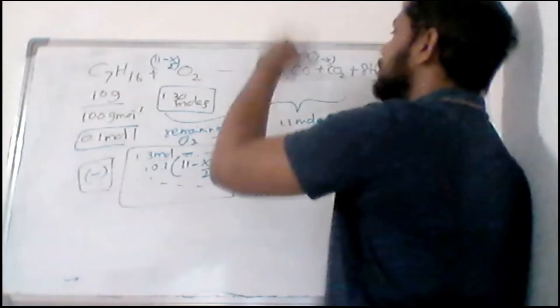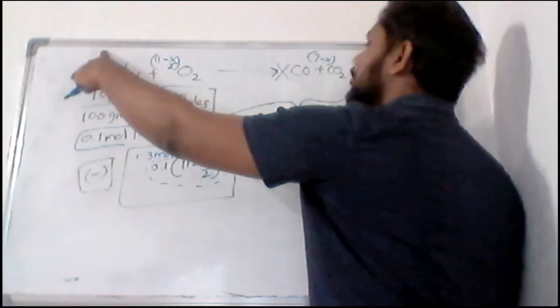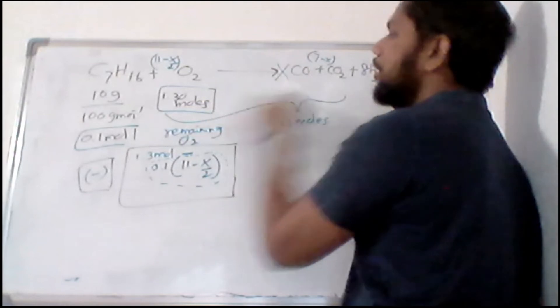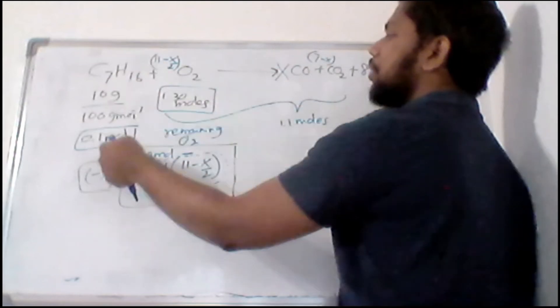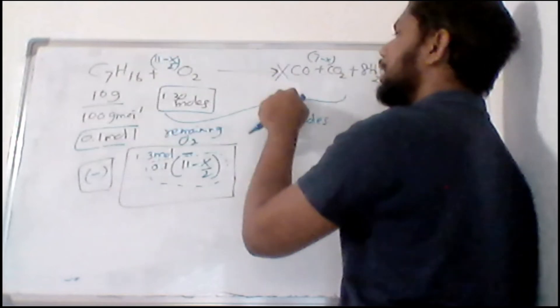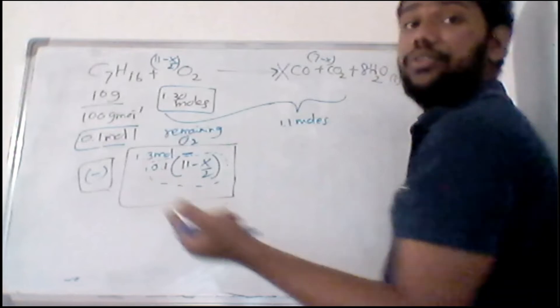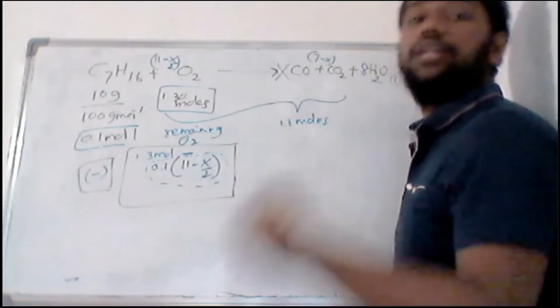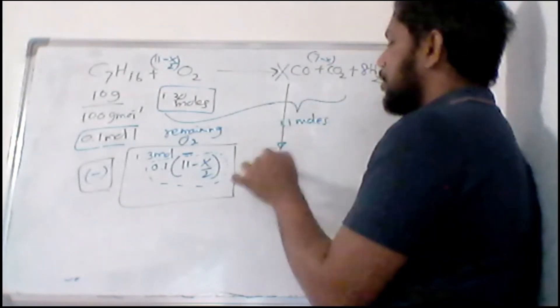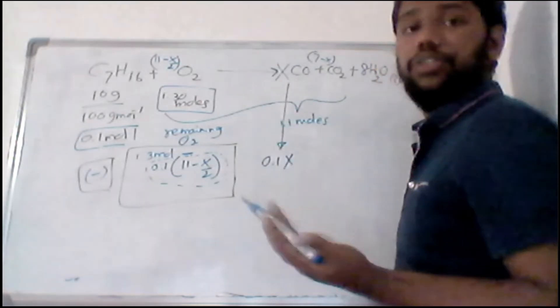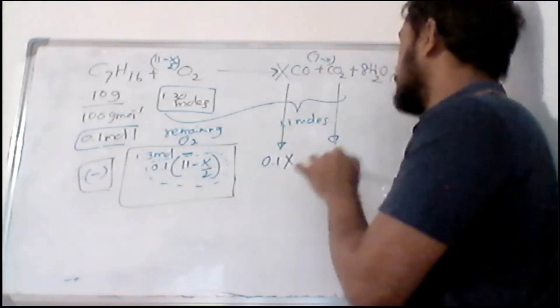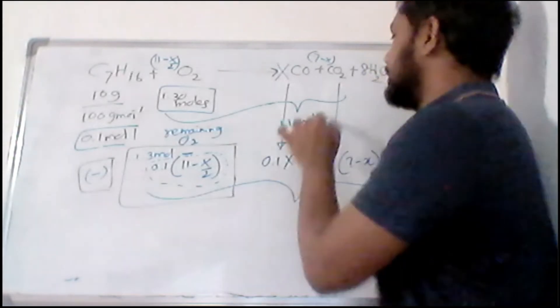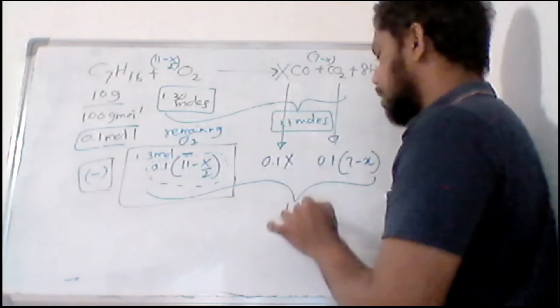Then how much CO is formed? So here the reacted amount of heptane is 0.1. So CO should be formed according to the stoichiometry. Like if you have 2 here, 0.1, if 1, 0.1 moles of heptane is reacted. If this is 2 here, 2 CO, it should be 0.2 moles of CO that should be formed. So how do you calculate? You multiply 0.2 by the stoichiometry to get 0.2. So this is similar. How much CO is going to form? 0.1x because we don't know. And here also it would be 0.1 times 7 minus x. And when you add all these three, basically, finally it should be equal to 1.1 moles.